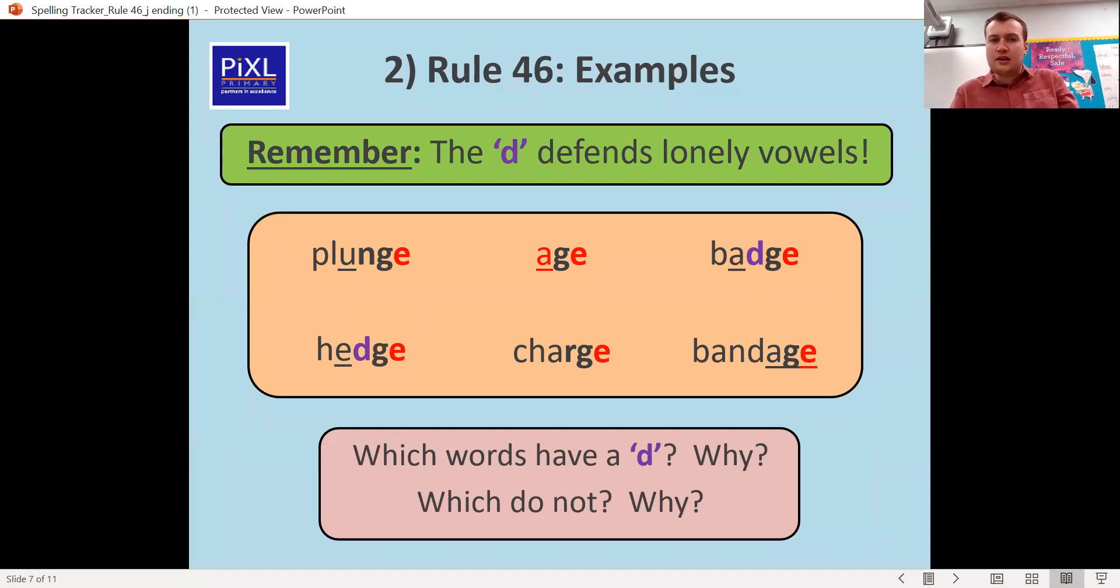So here is an example of some of those words. You've got plunge which means to dive down. Hedge which is like a big bush. Age which is how old you are. Charge. Lots of different meanings of charge. It could be like your phone is charged or it could be to run at someone you charge. Then there's badge. On your birthday you might have a badge that says how old you are. And then bandage which is what you put around something when you're hurt. Just think here we have the D because that E and A is on its own.